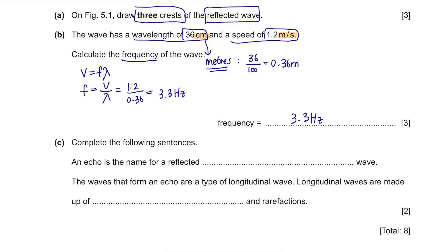Part C. Complete the following sentences. An echo is the name for a reflected sound wave. We hear the echo so it's a reflected sound wave. The waves that form an echo are a type of longitudinal wave. Longitudinal waves are made up of compressions and rarefactions. They are made of compressions and rarefactions. It's an easy question.